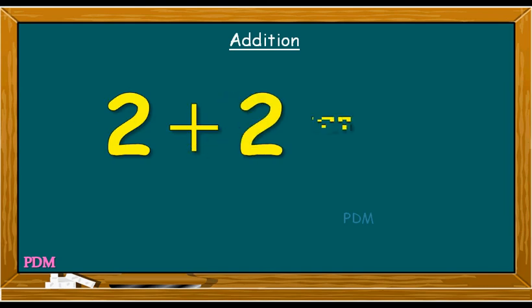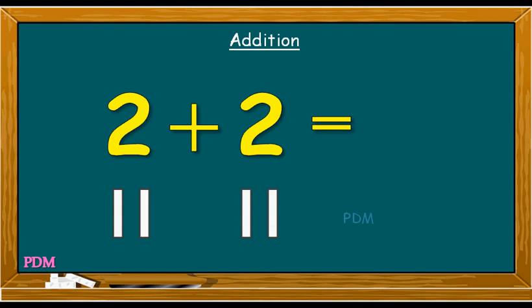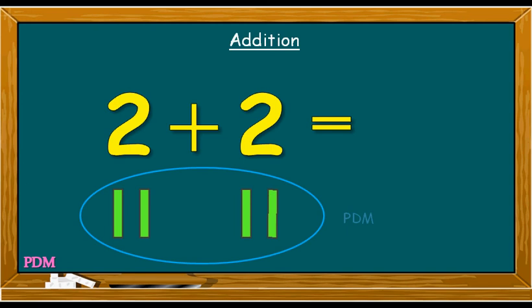Two plus two. The first set of lines stands for two and the second set of lines stands for two. When we add them both together, the sum comes one, two, three, four. Therefore, the sum of two plus two is equal to four.